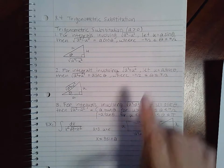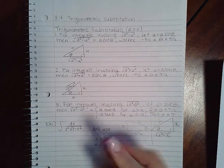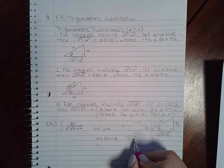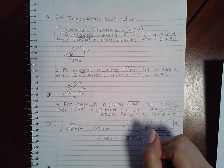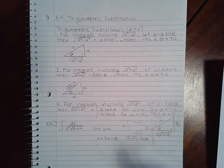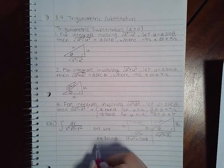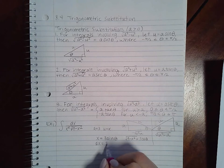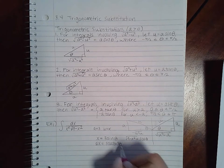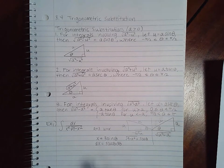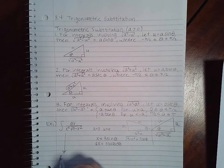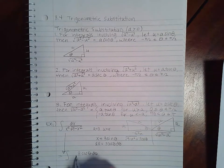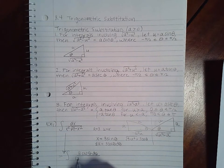This is u and this is a, so I'm going to say x is going to equal 3 sine theta. I also know that the square root part is going to equal a cosine theta, which is 3 cosine theta. What I don't have is dx. If I know what x is, I can find dx by taking the derivative. The derivative of 3 sine theta is 3 cosine theta d theta.